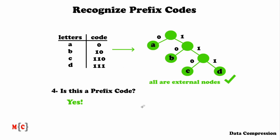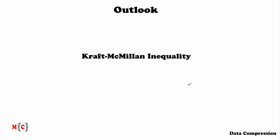Let's go to the last part of this video: the Outlook. Now that you've studied what prefix codes are and can recognize them, a next nice subject to look at is the Kraft-McMillan inequality. The Kraft-McMillan inequality guarantees that if we have a uniquely decodable code that is not a prefix code, we can always find a prefix code with the same codeword length. This is very strong, so if you want to continue developing your knowledge on prefix codes, you should really have a look at this.